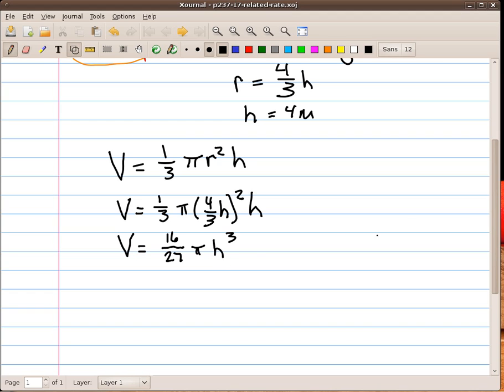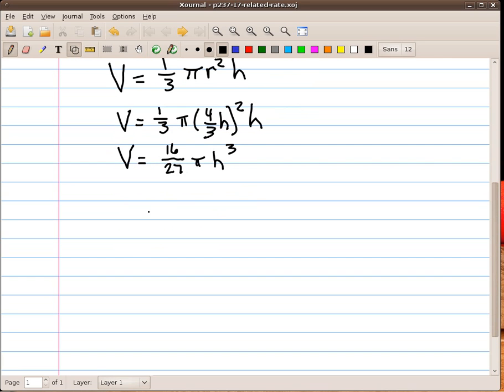Now, as in any related rates problem, we have to differentiate implicitly with respect to t. That means if I take the derivative on this side, I get dV dt. And then on this side, I use my power rule, which makes this 16 ninths pi h squared. And then because of the chain rule, dh over dt.